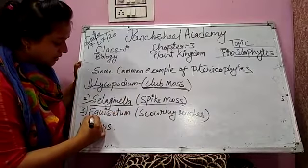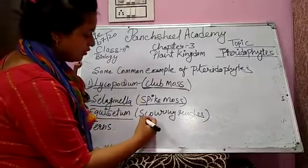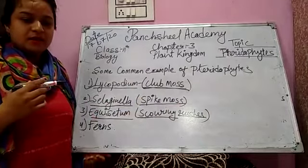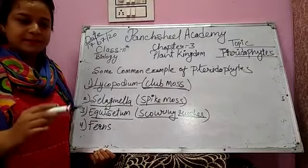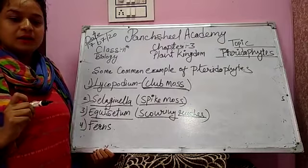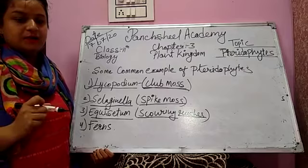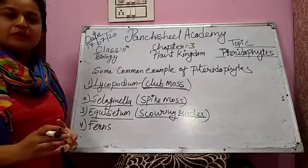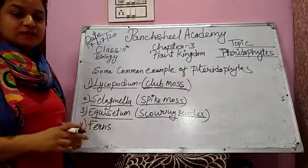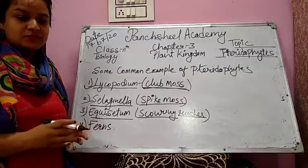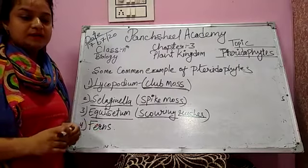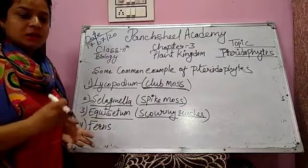The next example is Equisetum, also commonly known as scouring rushes. Scouring rushes grow along the banks of rivers in sandy and swampy soil. Some species grow along sandy soil near railway lines. Plants are generally perennial herbs. They develop aerial branches which arise from the nodes. Spores are homosporous and germinate to produce independent, free-living gametophytes.